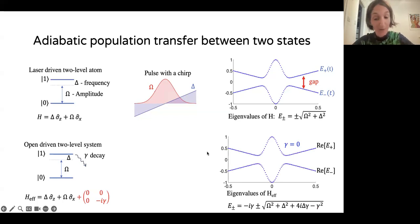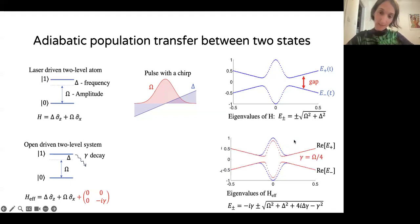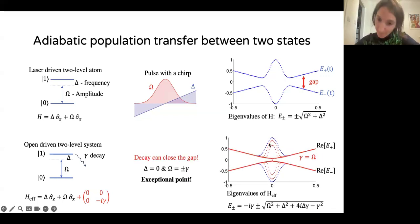We can introduce an imaginary component to the decaying energy level, and let's see how that affects the eigenstates. Now the eigenvalues are complex. When gamma equals zero, when there's no decay, it's the same problem. But now let us slowly increase the decay rate. What you see is that the energy levels start approaching each other, and at some critical point, the gap can close. So this is a striking difference between a closed system and an open system. Once we introduce loss, and the loss rate equals the amplitude of the drive, the gap can close. This expression under the square root vanishes at that point.